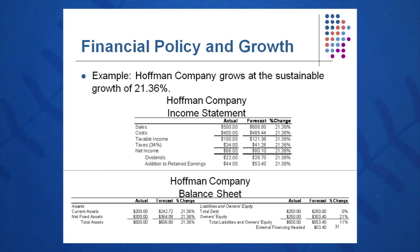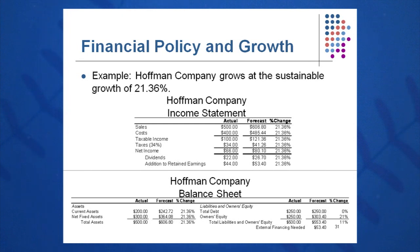So it'll be 0.132 times two-thirds on top, and one minus that same value on the bottom. When I do the mathematics, I get 9.65% as how fast I can grow Huffman Company without any external financing of any sort. Remember, to grow at 20% we needed 47.2 in external financing. To grow at 9.65%, we need no external financing.